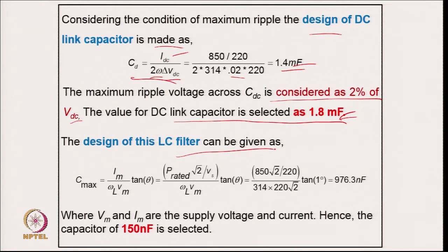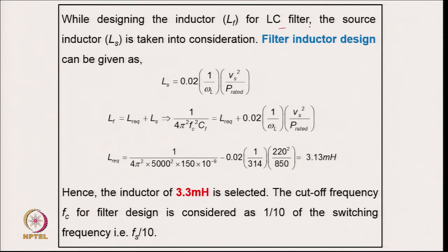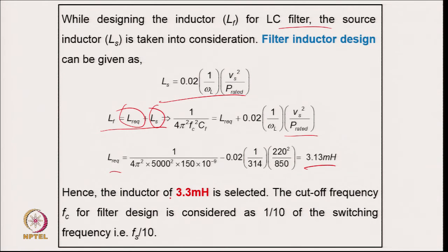Coming to the EMI LC filter design for Example 5: the capacitor is calculated from C = I_m / (V_m × ω_l × tan θ), where V_m and I_m are the peak supply voltage and current and θ is the displacement angle. This gives 976.3 nF; a lower value of 150 nF is selected. The remaining filter compensation comes from the inductor. The total required inductance is source inductance plus additional inductance, giving 3.13 mH. A slightly higher value of 3.3 mH is selected, with cutoff at one-tenth of the switching frequency.